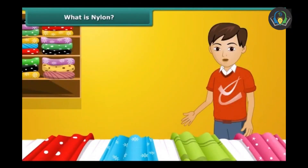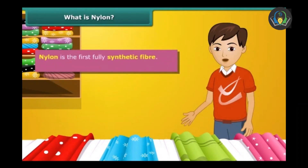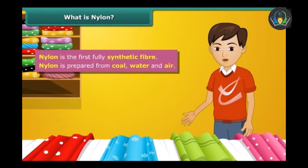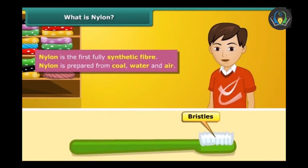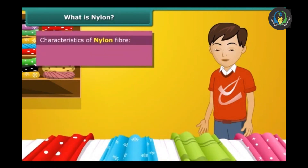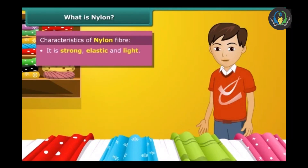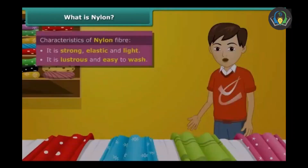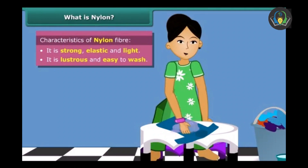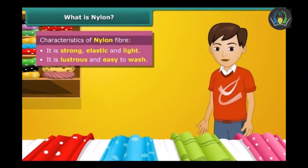Do you know which is the first fully synthetic fiber? It's nylon. Nylon is prepared from cold water and air. The first thing made out of nylon was toothbrush bristles. Why is nylon so popular for making clothes? Well, because it is strong, elastic, light, lustrous and easy to wash.